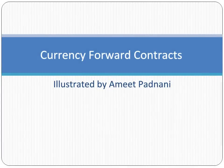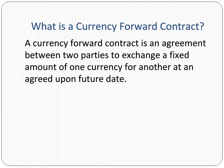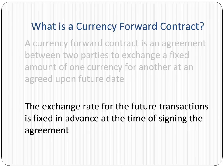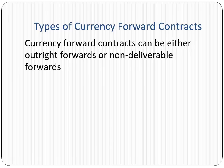Welcome to Currency Forward Contracts. A currency forward contract is an agreement between two parties to exchange a fixed amount of one currency for another at an agreed upon future date. The exchange rate for the future transaction is fixed in advance at the time of signing the agreement. Currency forward contracts can be either outright forwards or non-deliverable forwards.